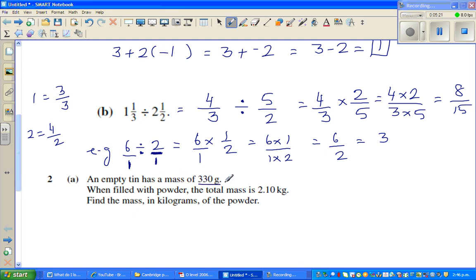Empty tin has a mass of 330 grams. When filled with powder, the total mass is 2.10 kilograms. Find the mass in kilograms. I'm going to change first. You can do it in different ways, but I think it's easier to change this into grams. You should know this fact, 1 kilogram, kilo stands for thousand, is 1,000 grams. This is something that, basic fact, you should know.